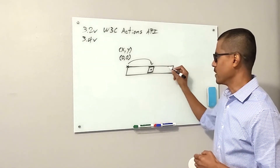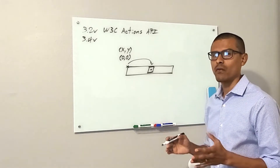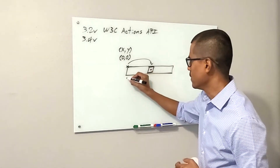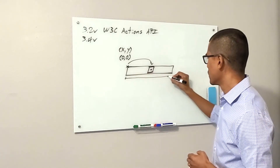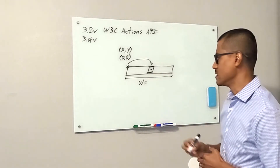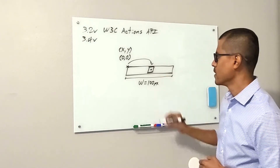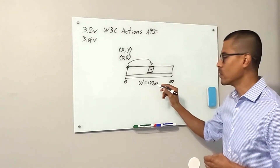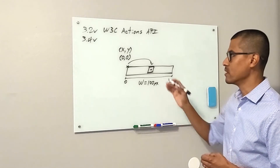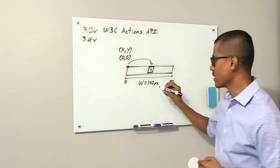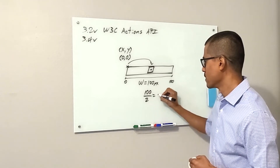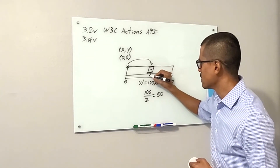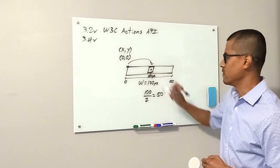Let's say we want to click a specific area of the element. First, we need to determine the width of the element — there is a special method in Selenium WebDriver for that. For simplicity, let's say this element is 100 pixels wide: pixel 0 on the left and pixel 100 on the right. We take the width and divide it by 2 because clicking happens at the center point, giving us 50. So pixel 50 represents the center — that is where the click happens.